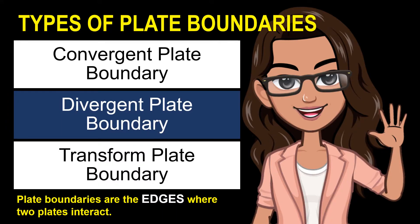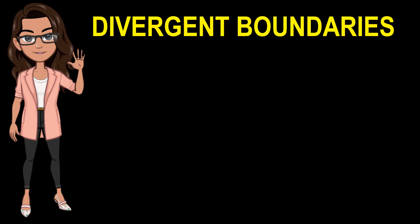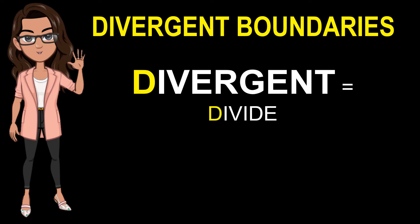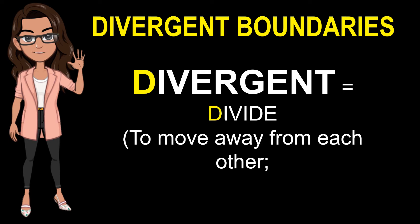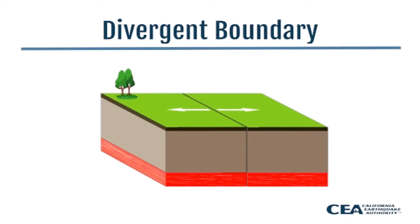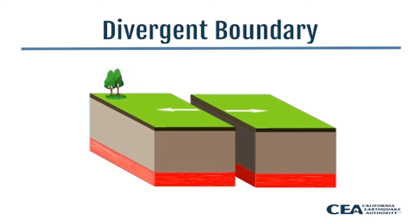The second type of plate boundaries is the divergent plate boundaries. The word divergent means to divide. In simpler definitions, it means to move away from each other or to separate. Divergent boundaries are where two plates are moving apart. The space created can also fill with new crustal material sourced from molten magma that forms below. Divergent boundaries can form within continents but will eventually open up and become ocean basins.